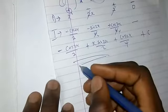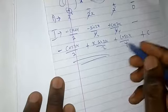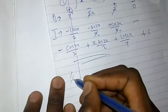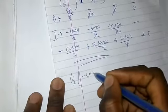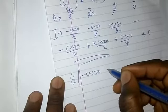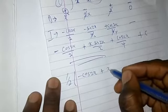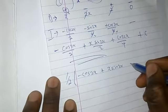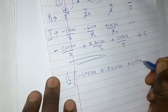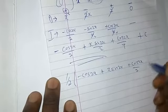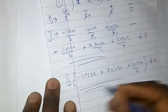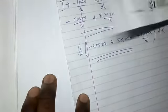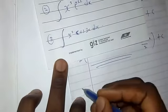You can factor out 1/2 to write the answer as (1/2)[−cos(2x) + x·sin(2x) + cos(2x)/2] + C. That is your simplified answer for Example 1.